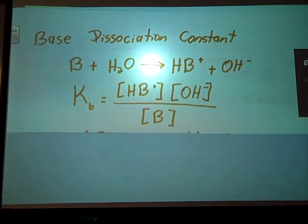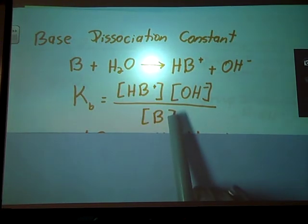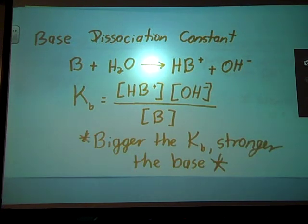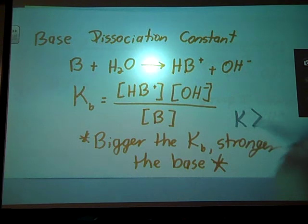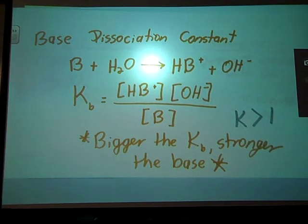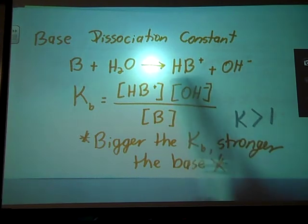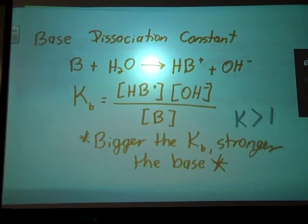So same principle. Reactants go on the top. Excuse me. Reactants go on the bottom. Products go on the top. Pure liquids don't get to go. Hence why the water is not here. And we're looking for a Kb bigger than 1, because we want more products than reactants. More of those dissociated ions over here on the product's side.